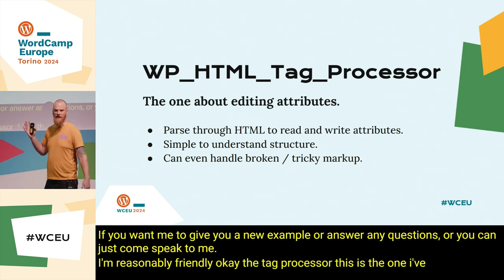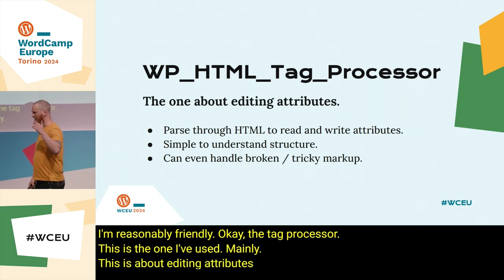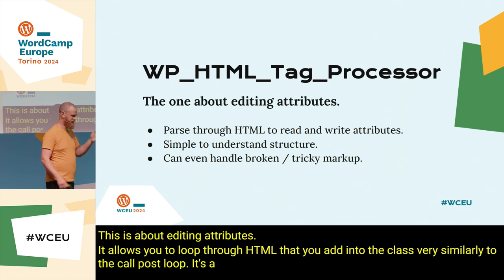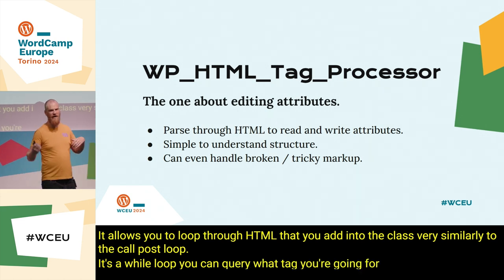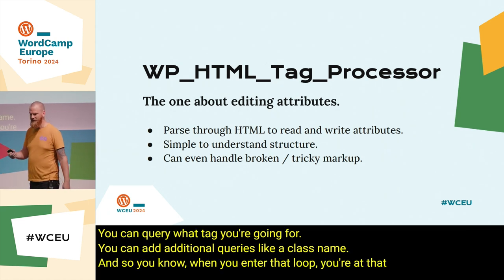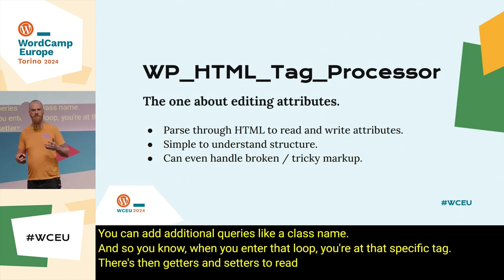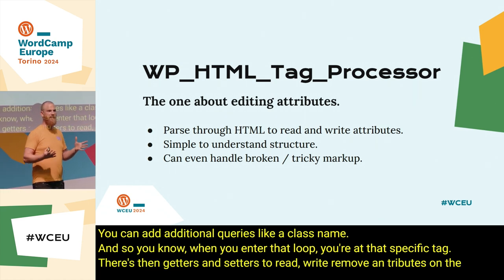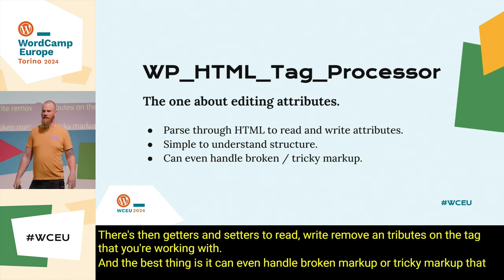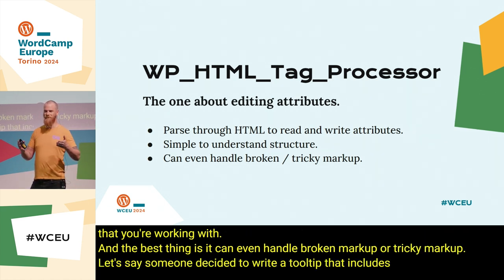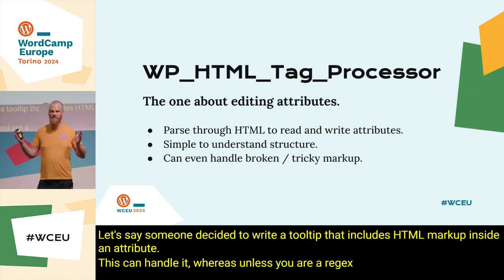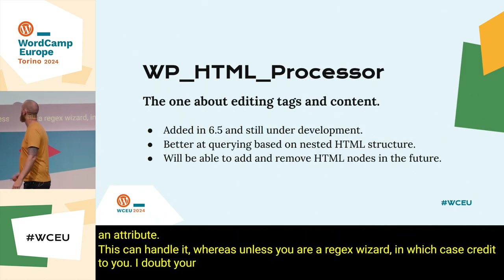The tag processor is the one I've used mainly. This is about editing attributes. It allows you to loop through HTML that you add into the class, very similarly to the core post loop — it's a while loop. You can query what tag you're going for, and you can add additional queries like a class name, so you know when you enter that loop you're at that specific tag. There are then getters and setters to read, write, and remove attributes on the tag you're working with. And the best thing is it can even handle broken or tricky markup — for example, someone writing a tooltip that includes HTML markup inside an attribute. This can handle it, whereas unless you're a regex wizard, I doubt your expression will.